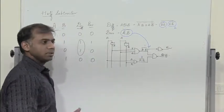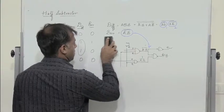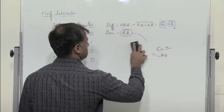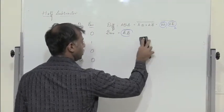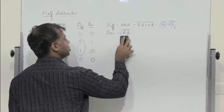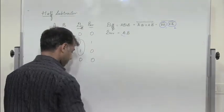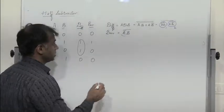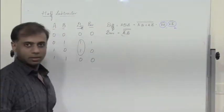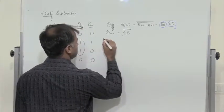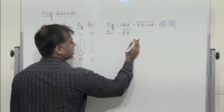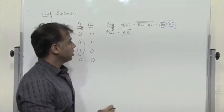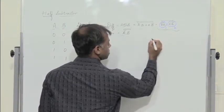Now let us implement the same thing using NOR gates. For NOR gate implementation, all terms need to have a plus sign. Starting with the difference expression: we have A̅B̅ · AB̅ all complemented. Applying De Morgan's rule, we get A double bar plus B̅, times A̅ plus B double bar, all complemented.